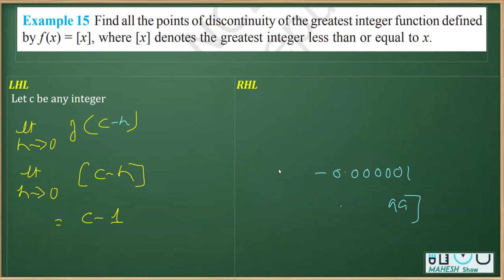Therefore, we got the LHL. Now we'll continue and find the right hand limit. For RHL, we take limit as h tends to 0 of f(c + h).